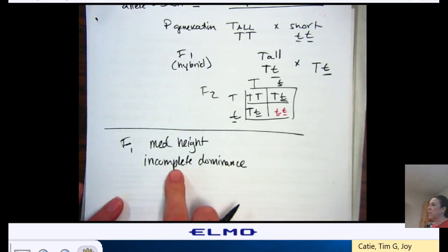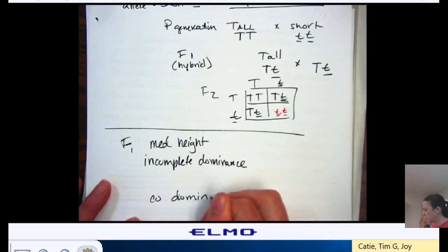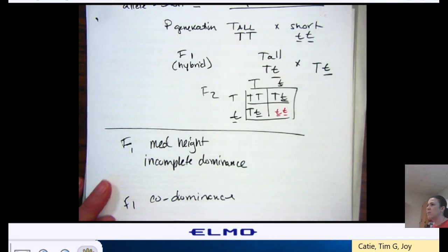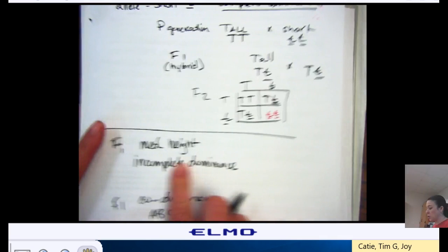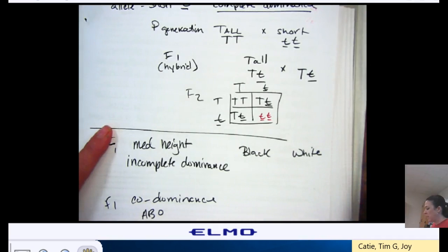If I get like a blending, what happens when I get codominance? In my F1. Yeah, usually I use the cows, or sometimes we'll talk about like ABO blood typing. So, if we're going with cows, and I have a black cow crossed with a white cow, in incomplete dominance, I would get a brown, or a gray, let's say. It's kind of in between black and white.